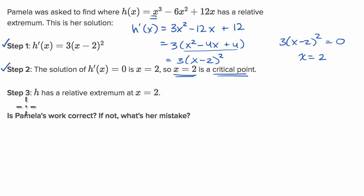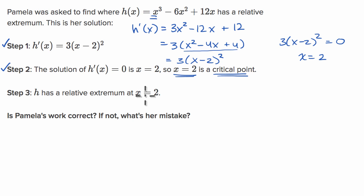And then step three: h has a relative extremum at x equals two. She made a big conclusion here — she assumed that because the derivative was zero, we have a relative extremum.